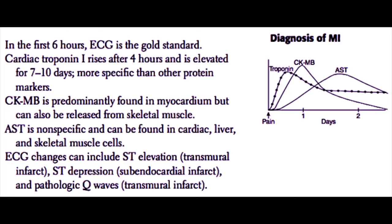For diagnosis of myocardial infarction, the electrocardiogram is the most important test within the first six hours. After about four hours after the myocardial infarction, the cardiac troponin I will begin to rise, and the troponin will be elevated for about one week to ten days. Troponin is the most specific out of all the other protein markers in the bloodstream. The MB fraction of the creatine kinase, or CKMB, is predominantly found in the myocardium but may also be released from skeletal muscle. AST, which is a liver enzyme, may also be released by cardiac muscle, and it is also very nonspecific.